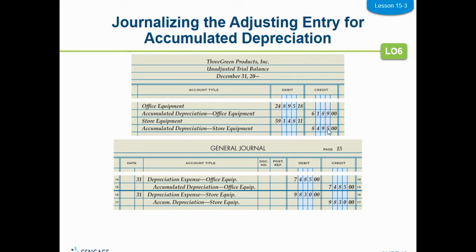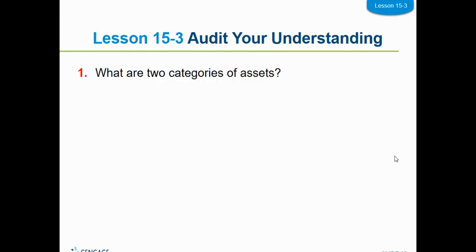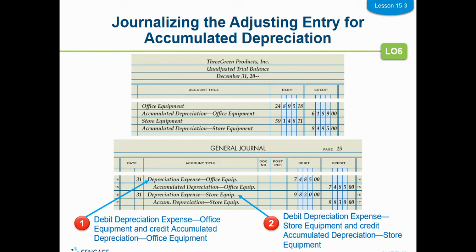When we do this transaction, expenses have debit balances, so depreciation expense is going to go up with a debit, and accumulated depreciation is going to go up with a credit. They're both going up — one with a debit, one with a credit. That is how we do the adjusting entry for accumulated depreciation.